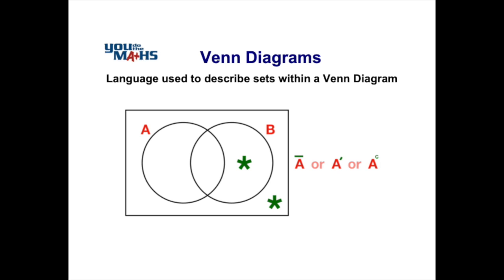In terms of notation we can have A with a bar on top, or A with a little apostrophe on the right hand side, or even A with a little C in the top right hand corner. All of those represent complements and they're basically elements that are inside the Venn diagram but not inside set A.